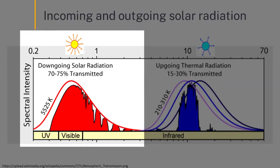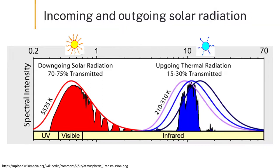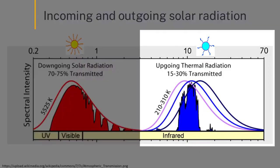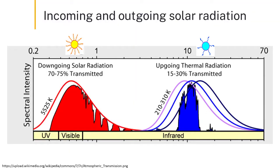It includes ultraviolet and the visible light spectrum. Whereas the energy that's being emitted by the earth — the earth is just at the right temperature — that energy is in the long wavelengths, in the infrared, and there's almost no overlap between the two.